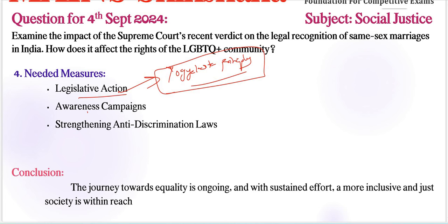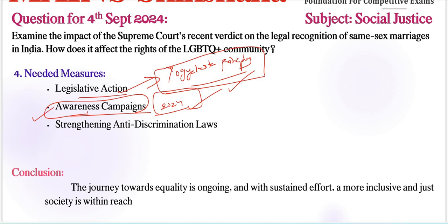The Yogyakarta Principles include all social rights-related issues. Awareness campaigns are also very important. For example, the Ministry of Social Justice and Empowerment's 2024 campaign on LGBTQ+ inclusion in schools and workplaces is a positive step that should be expanded. Strengthening anti-discrimination laws is also very important.